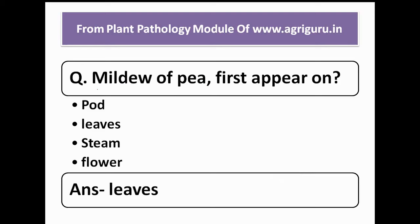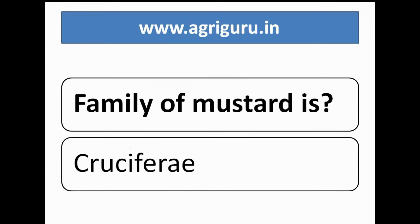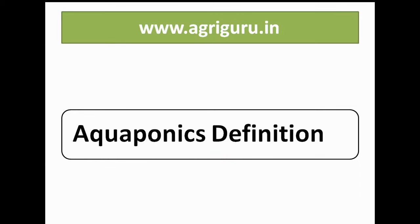Another question is from the plant pathology module of agriguru.in. The question is: downy mildew of pea appears first on which part? The answer is leaves. The 15th question is very easy — it is about the family of mustard, and the correct answer is Cruciferae.